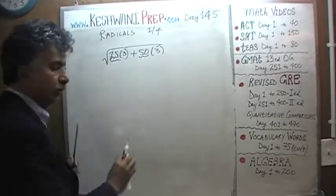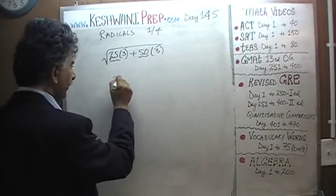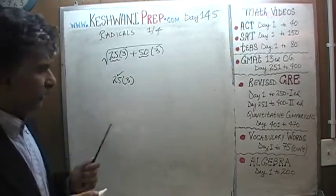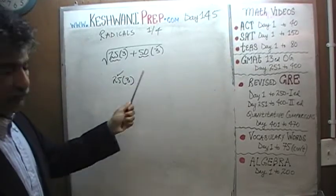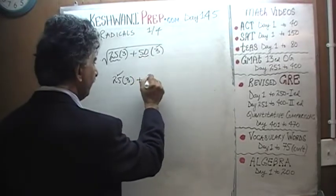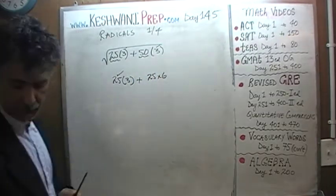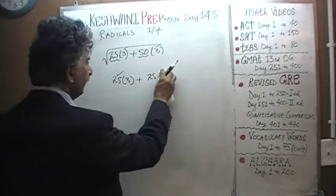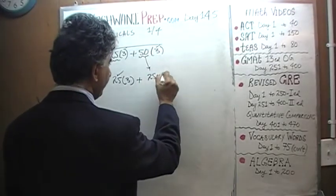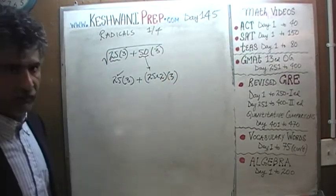Taking the 3 out is not going to get us anywhere. What we need to do is keep 25 times 3 as is, because 25 is a perfect square. If we can get a 25 out of the second quantity, we're done. So 50 times 3 can be written as 25 times 2 times 3. Now we have our 25.